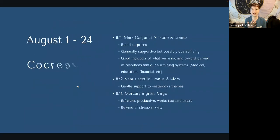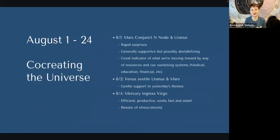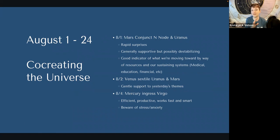Diving into the first week of August, on the first we have Mars conjunct the North Node and Uranus. This is something you heard me talking about at the end of July as well, because it moves a little bit slowly. Thanks to Uranus sitting on the North Node, Mars now joins Uranus. What we're experiencing here is rapid surprises — could be generally supportive, but possibly destabilizing.